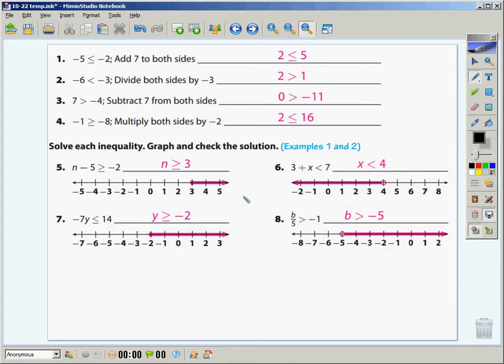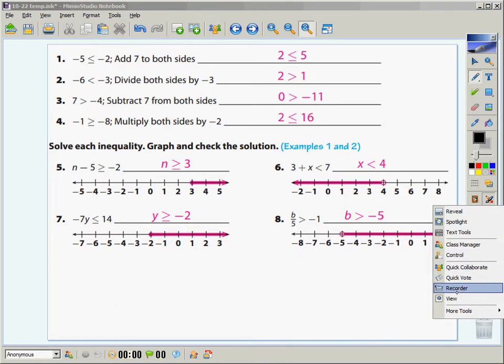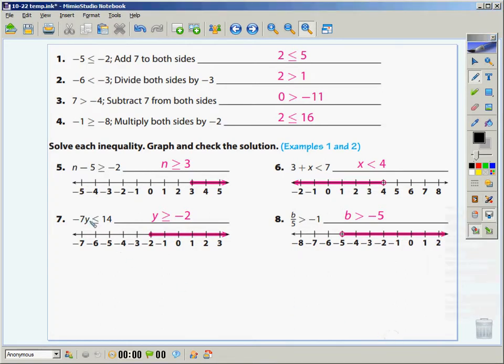There are the answers for the first eight from your homework. I will gladly go over any part of them that I need to go over. Number seven, you had a negative 7y is less than or equal to 14. If I want to get y by itself, it's being multiplied by a negative 7. I have to divide by a negative 7. The minute I divide by a negative, what do I have to do to my inequality? Flip it. I've got to flip it over. This is going to now be greater than or equal to.